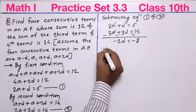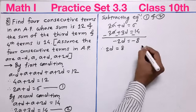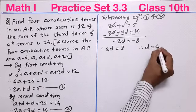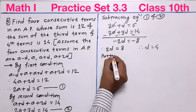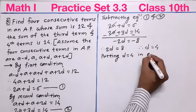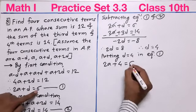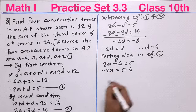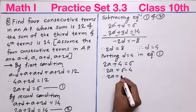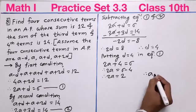Both sides are negative, so we write 2D = 8, and dividing by 2, we get D = 4. Substituting D = 4 into equation 1: 2A + 4 = 6. Shifting 4 to the right: 2A = 6 minus 4 = 2, so A = 1.